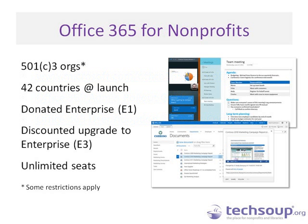There are two big offers. There's donated Enterprise E1 and a discounted upgrade to Enterprise E3, and those are unlimited seats — so whether your organization is 3 people, 10 people, or 3,000 people, it doesn't matter. The difference between E1 and E3 is that E3 gives you desktop applications in addition to web applications, plus additional Excel, Access, and Visio services, some additional on-premise service integration, and archiving and legal elements associated with your email. The upgrade cost to E3 is $4.50 per seat, which is a discounted price from the normal price.